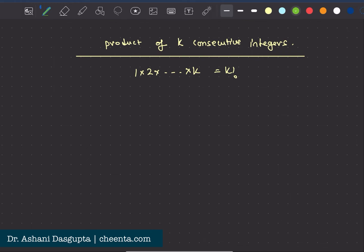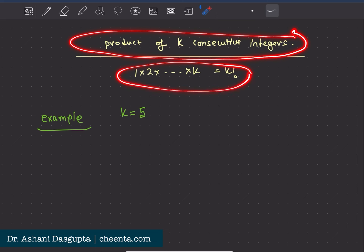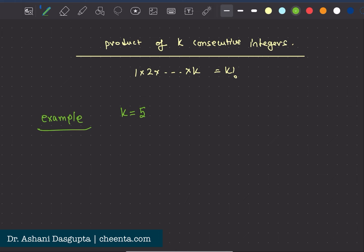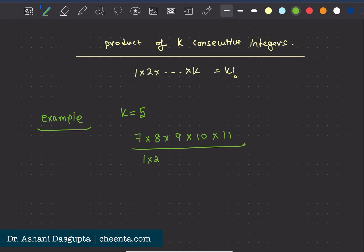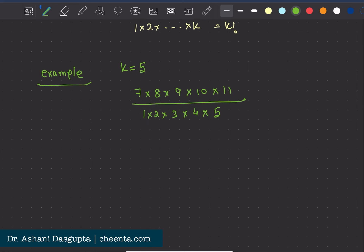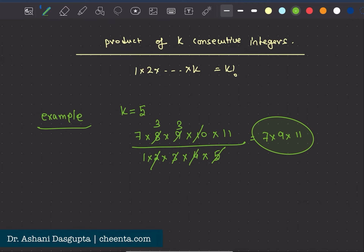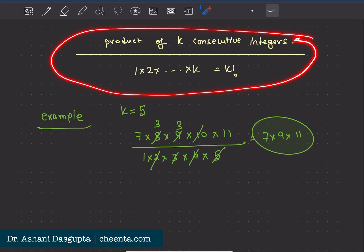Let's first look at an example to check whether this actually works. Let's take k equal to five — we take five consecutive integers and divide by five factorial. Suppose the five consecutive integers are seven, eight, nine, ten, eleven. Their product divided by five factorial: five times two divides ten, four divides eight, three divides nine, leaving seven times nine times eleven, which is an integer. So it works for this example, but we need to show it in the general case.